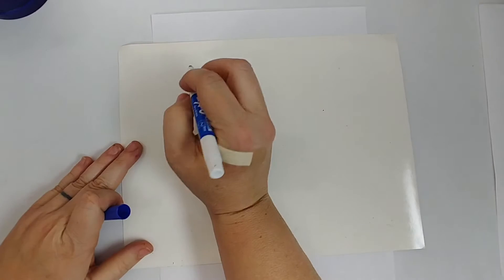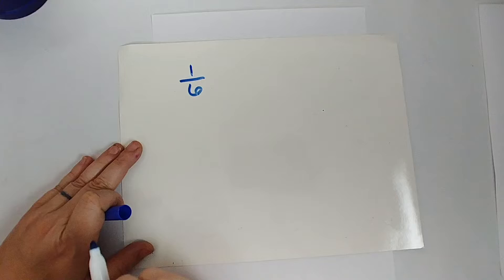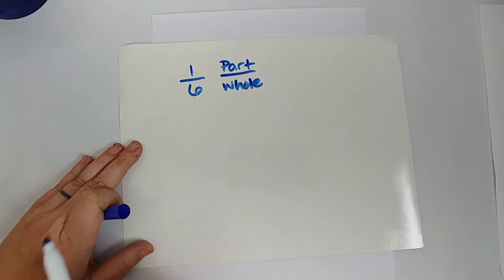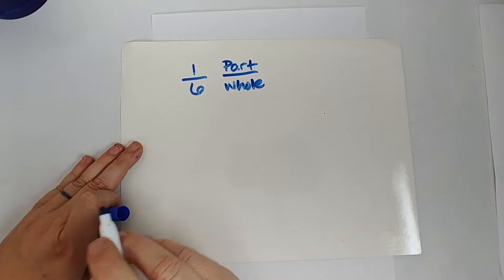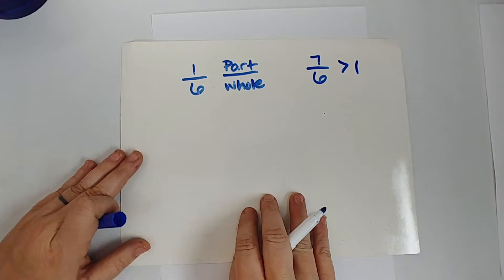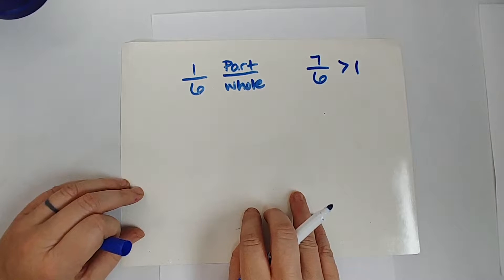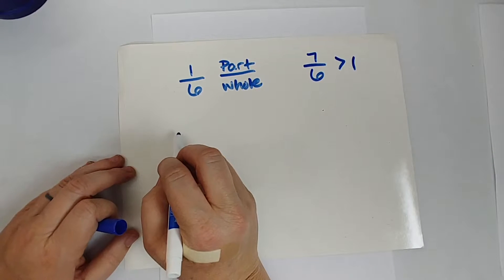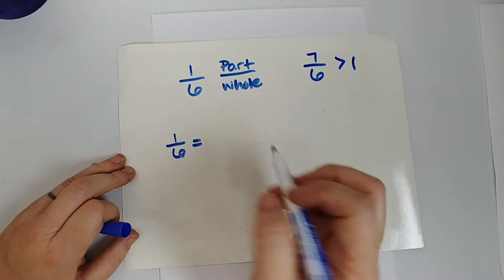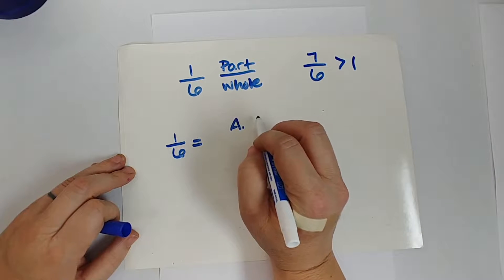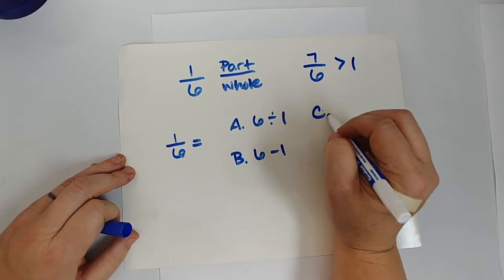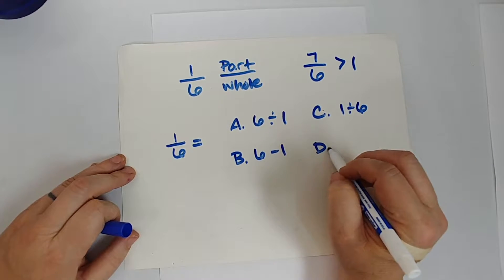When we have a fraction like one over six, we have part to whole. If our part is smaller than our whole, our fraction is less than one. If we have something like seven over six, that is greater than one. There's one type of question that comes up in fifth grade that people struggle with a little bit — they ask you: one sixth is equal to which of the following? Options like six divided by one, six minus one, one divided by six, or one minus six.